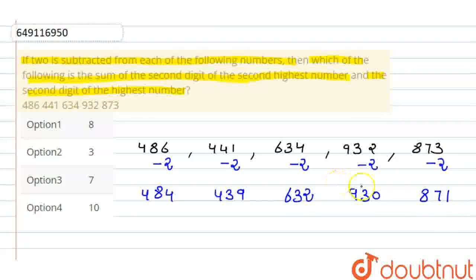Here we have to see the highest number. The highest number is 930. Second highest number we can see is 871.